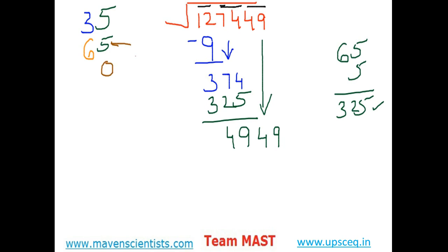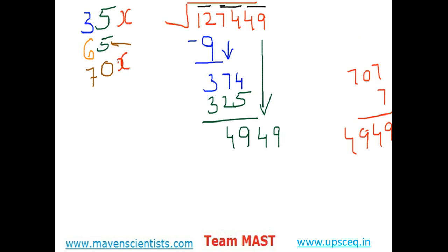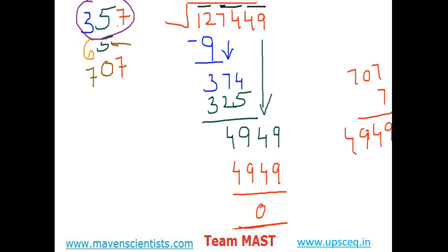Repeating the steps: double the previous guessed number 5 — two times 5 is 10 — so 0 and carry 1 to the previous 6, making it 7. The final step: guess x which when multiplied with 70x gives less than or equal to 4949. Since 7 squared is 49 and the number to match ends in 49, we can guess x is 7. So 707 times 7 gives exactly 4949. Subtracting gives remainder 0, which means 357 is the perfect square root of 127449.